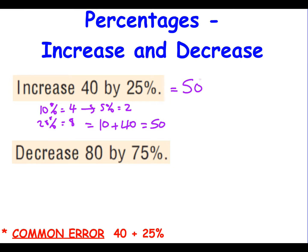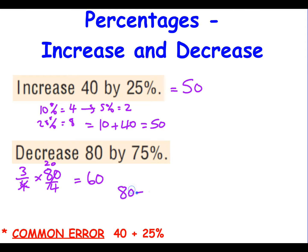Now decrease 80 by 75%. You could recognise 75% as the fraction three-quarters. Three-quarters of 80: using our fractions method, it becomes 3 times 20, which is 60. Now we have to decrease 80 by 75%: the 60 is only the 75% amount. So take the original amount, subtract the 75% we've worked out, and we end up with 20. Decreasing 80 by 75% gives us 20.